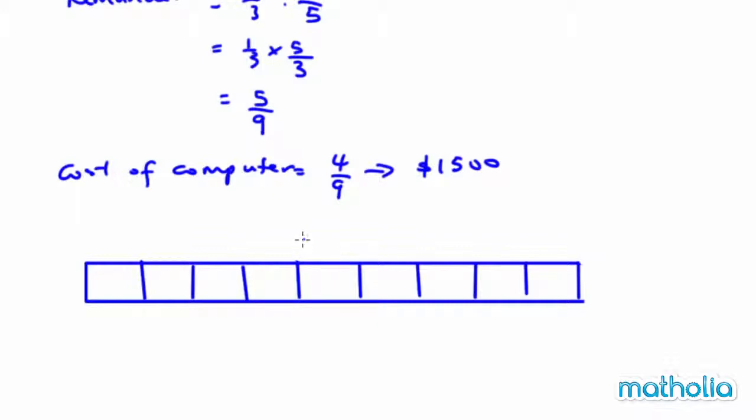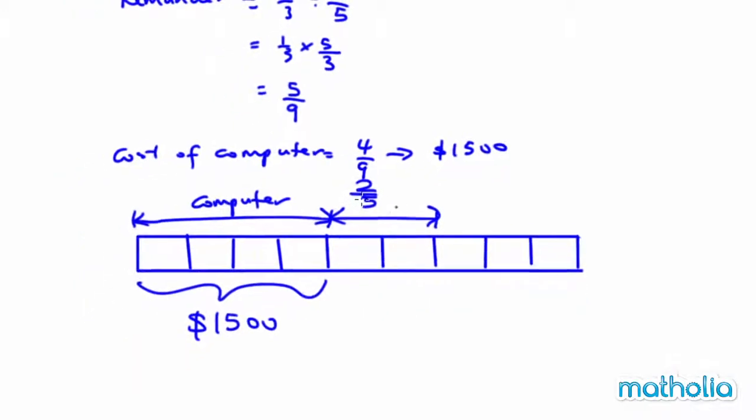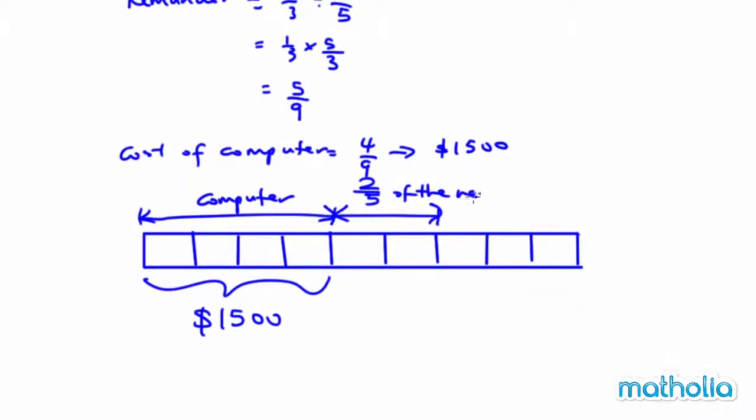Now, we are told that this will be on the computer. Alright, and this amount is $1,500. Now, this is two-fifths of the remainder. And this is actually one-third of his original.